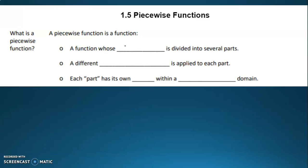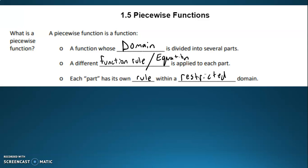A piecewise function is a function whose domain is divided into several parts, and a different function rule or equation is applied to each part. Each part has a rule within a restricted domain. So we're going to have a domain that's broken up, and for each part of the domain, we're going to have a different function rule or a different equation.